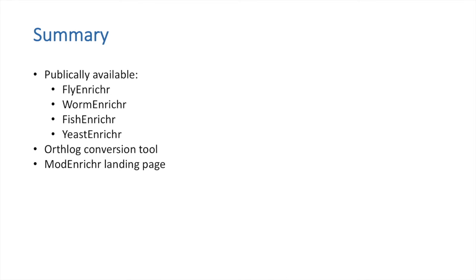In summary, we present FlyEnricher, WormEnricher, FishEnricher, and YeastEnricher for public use, each with a number of libraries built from existing and predicted associations. Each Enricher maintains its own independent functionality as well as an integrated functionality through the ortholog conversion tool and Enricher landing page. These new resources are potential tools for hypothesis generation for biologists that study model organisms. Thank you.